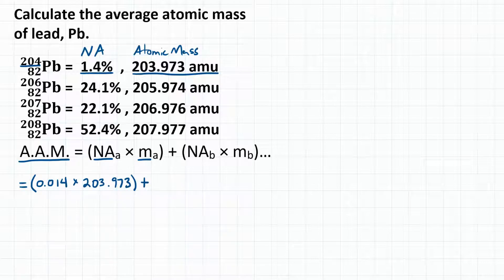We're going to add that to our second isotope, which is lead-206, which has a natural abundance of 24.1% and an atomic mass of 205.974 AMU. So 0.241 times 205.974.